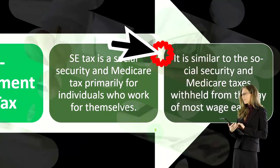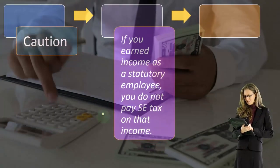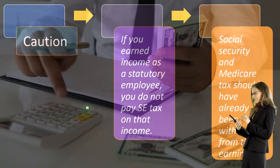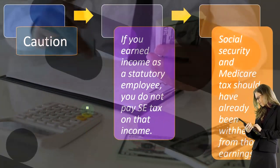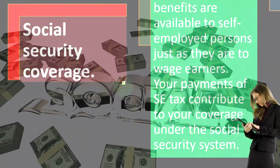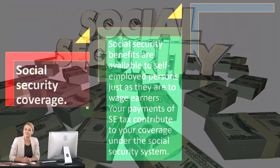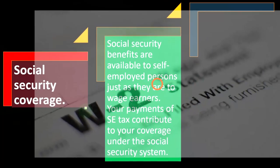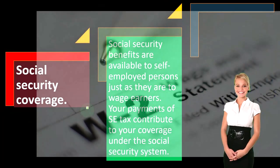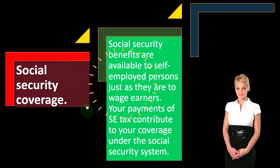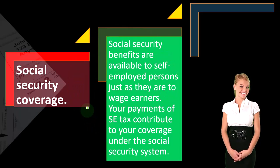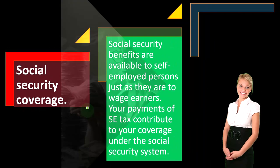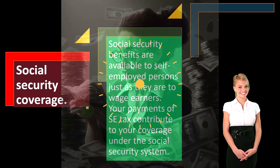SE tax is similar to the Social Security and Medicare taxes withheld from the pay of other wage earners. Caution: if you earn income as a statutory employee, you do not pay SE tax on that income — Social Security and Medicare tax should have already been withheld from those wages. When thinking about what type of income something is, the question becomes: is it subject to self-employment tax? W-2 income is not, because you already paid the equivalent. Schedule C income is the primary example subject to SE tax. Other income, like hobby income, may not be subject to SE tax — and that's a big deal because SE tax can be substantial.